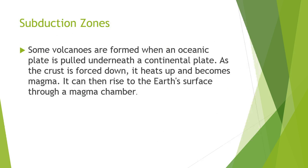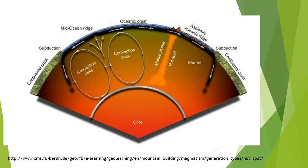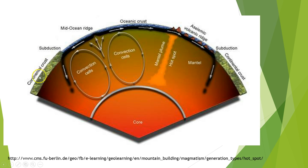Subduction zone: some volcanoes are formed when an oceanic plate is pulled underneath a continental plate. As the crust is forced down, it heats up and becomes magma. It can then rise to the Earth's surface through a magma chamber. In the subduction zone, the oceanic crust and the continental crust meet, and the oceanic crust gets forced down because it's not as strong as the continental crust — and that's exactly where subduction happens.